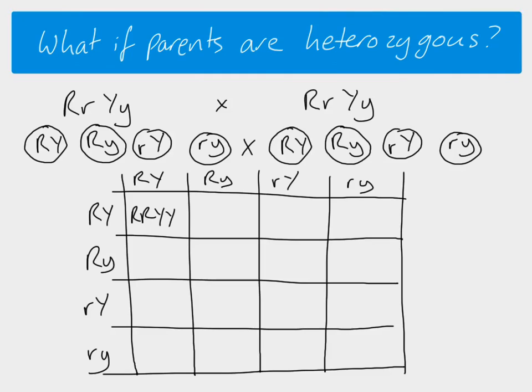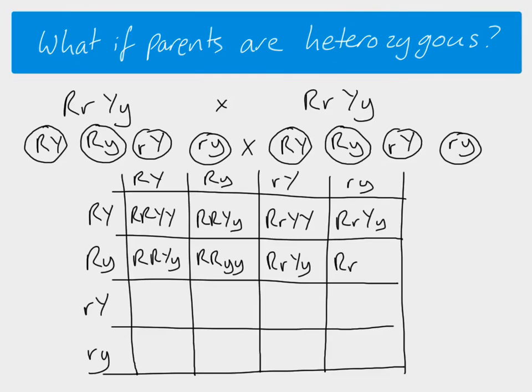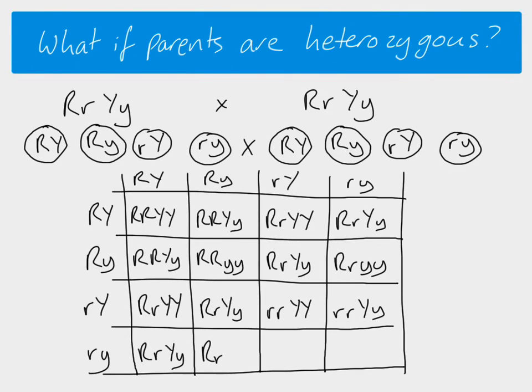So if we just go through and fill this in quickly, the tricky bit is to work out what the phenotypes are. Again, it's exactly the same — you just need to make sure you're clear about what the dominant allele and the recessive allele code for, and then identify what the phenotypes would be. That is your job. That's dihybrid inheritance — that's all. Thank you very much.